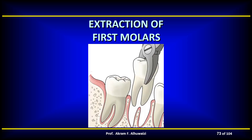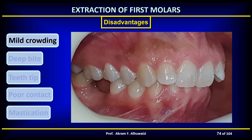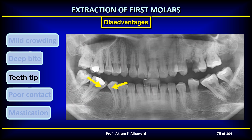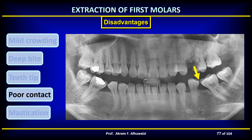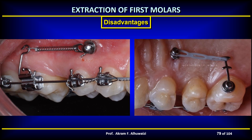The first permanent molar has been considered untouchable from the very beginning of the history of orthodontics and is considered the cornerstone of the dentition. The disadvantages of extracting first molars include: it doesn't give adequate space to relieve anterior crowding, it deepens the bite, second premolars and second molars may tip into the extraction site ending up with a poor contact area, and because of the large tooth loss mastication is affected. However, if fixed appliances are used skillfully, most problems caused by enforced first molar extractions can be overcome, though treatment lasts somewhat longer than with first premolar extractions.